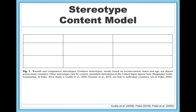Not all stereotypes are created equal. Psychological scientists have developed a model that describes the content of stereotypes toward different social groups. This model is known as the Stereotype Content Model, commonly abbreviated SCM, and it proposes that the content of stereotypes associated with different social groups varies along two dimensions: competence and warmth. Let's explore those dimensions as well as some of the predictions that stem from the model.